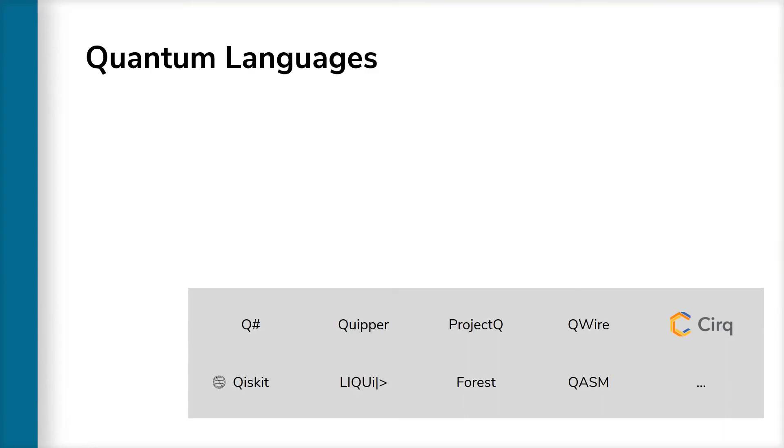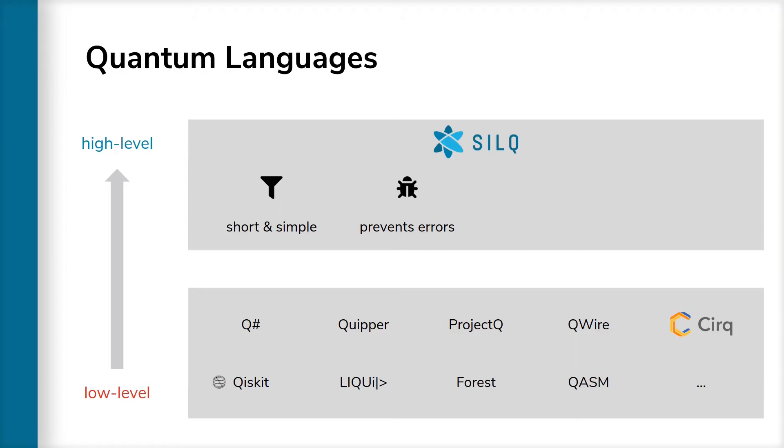In contrast to existing quantum languages, Zilk supports a descriptive view on quantum algorithms that expresses the high-level intent of the programmer. As a consequence, Zilk algorithms are significantly shorter and simpler, less error-prone, and modify the program's quantum state according to an intuitive semantics that follows the laws of quantum physics.